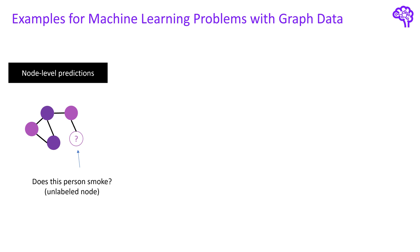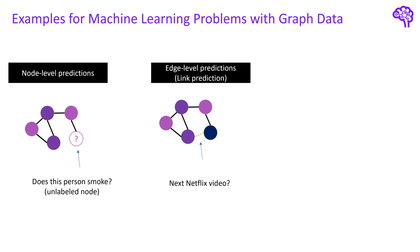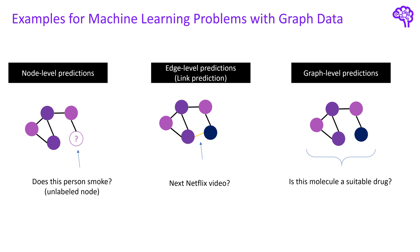Another possibility is called link prediction, or edge-level prediction. Here you simply predict whether there will be a connection between two nodes in the graph. This is for example used by companies to predict which customer is likely to buy which product next — basically the connection between people and items. Finally, you can also use the whole graph as input and classify it or predict an attribute of interest. This is commonly done with molecule data, for instance to identify if a molecule is a suitable drug.